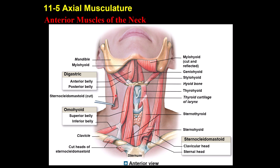If both sternocleidomastoid muscles contract at the same time, they cause flexion of the head — like saying yes. If only one of them contracts, the head moves to the opposite side. So if both contract alternately, it's the same as saying no. In summary: both contracting together causes neck flexion, and one contracting moves the head to the opposite side.